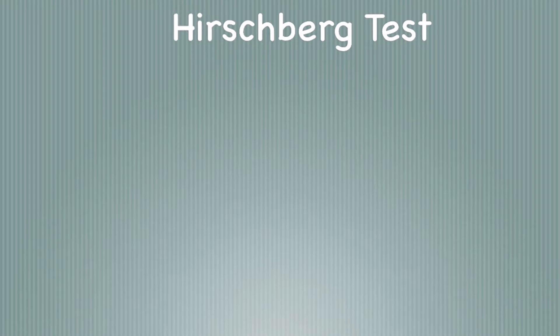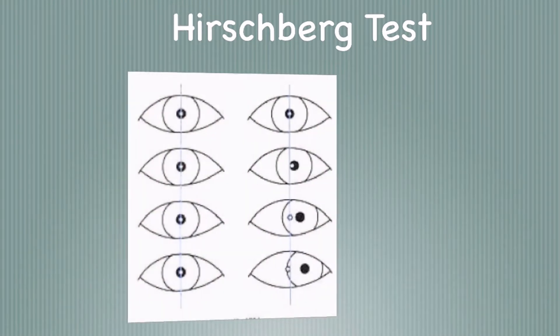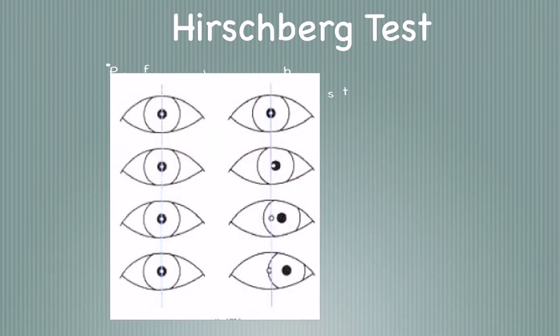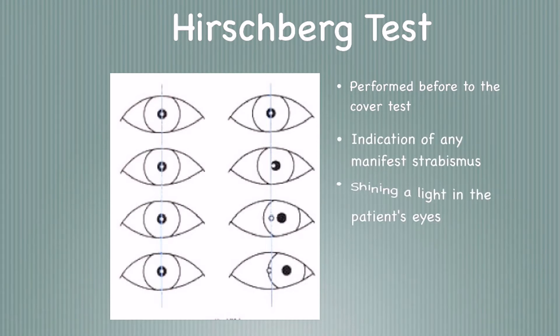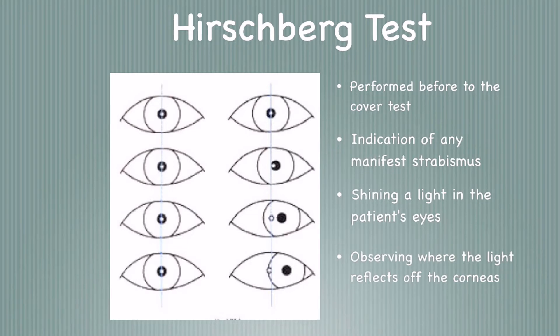The Hirschberg test is performed prior to the cover test. It gives an indication of any manifest strabismus present prior to testing. It is performed by shining a light in the patient's eyes and observing where the light reflects off the corneas.